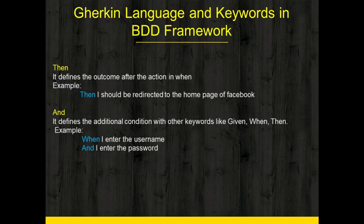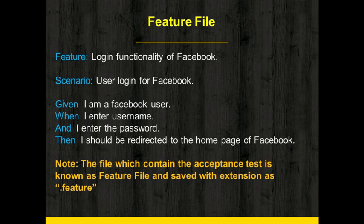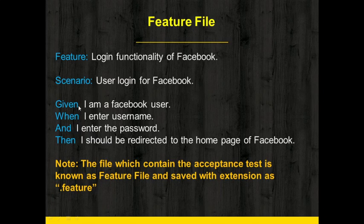This is all about the important keywords, and we'll use them in detail in our upcoming sessions. Now let's check the complete feature file as an example. Here is a feature file defined using Gherkin keywords, where the Feature keyword gives a small description of the feature, the Scenario keyword gives a short description of the scenario, and the Given keyword defines the precondition of the scenario. The When keyword defines the action, and And helps us give additional conditions to the Given, When, and Then keywords.